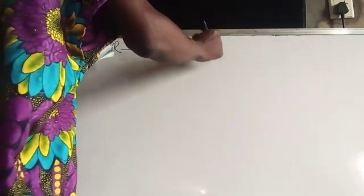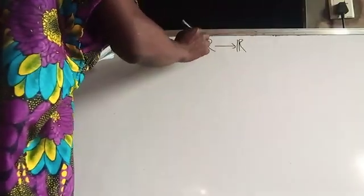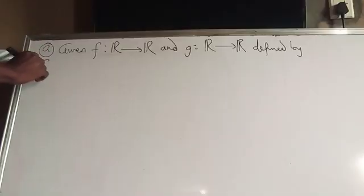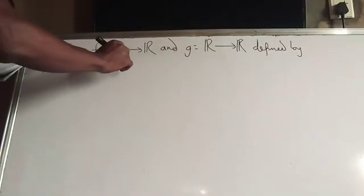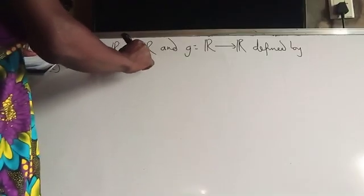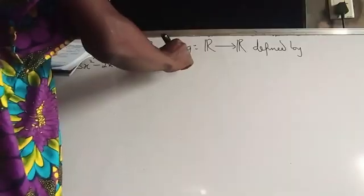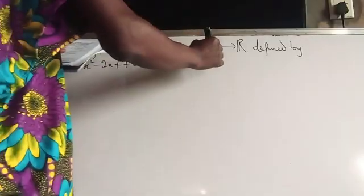Let's look at the example. The first example: F is a function that takes all set of real numbers to real numbers, because F is a real value function. G is also a real value function. These two functions are defined by F(x) = 3x² - 2x + 7, and G(x) = 3x + 2.